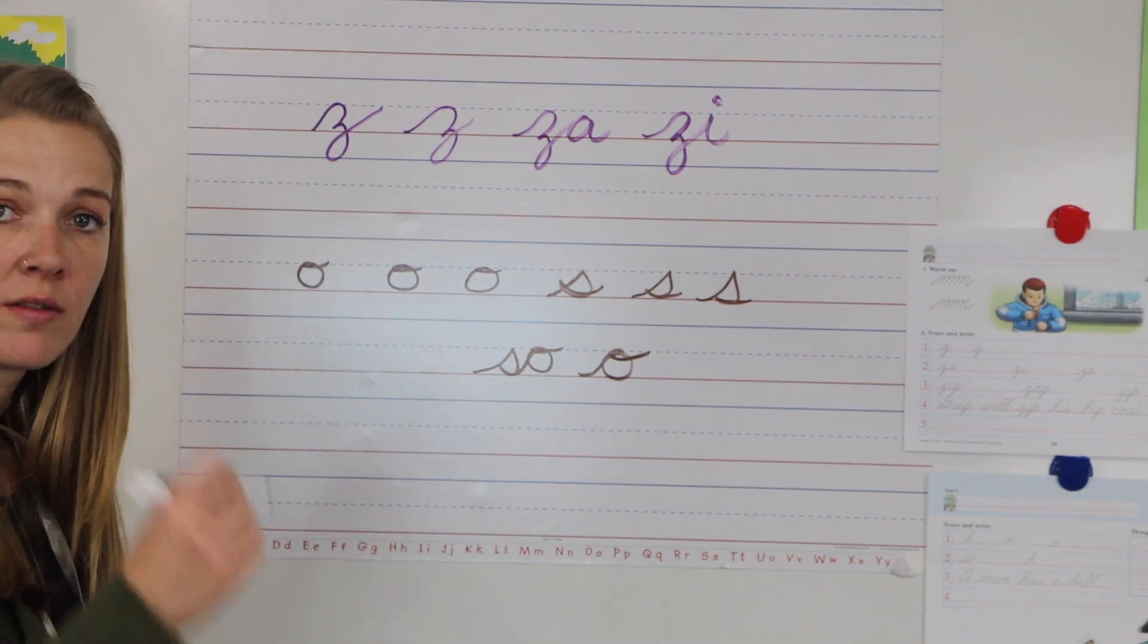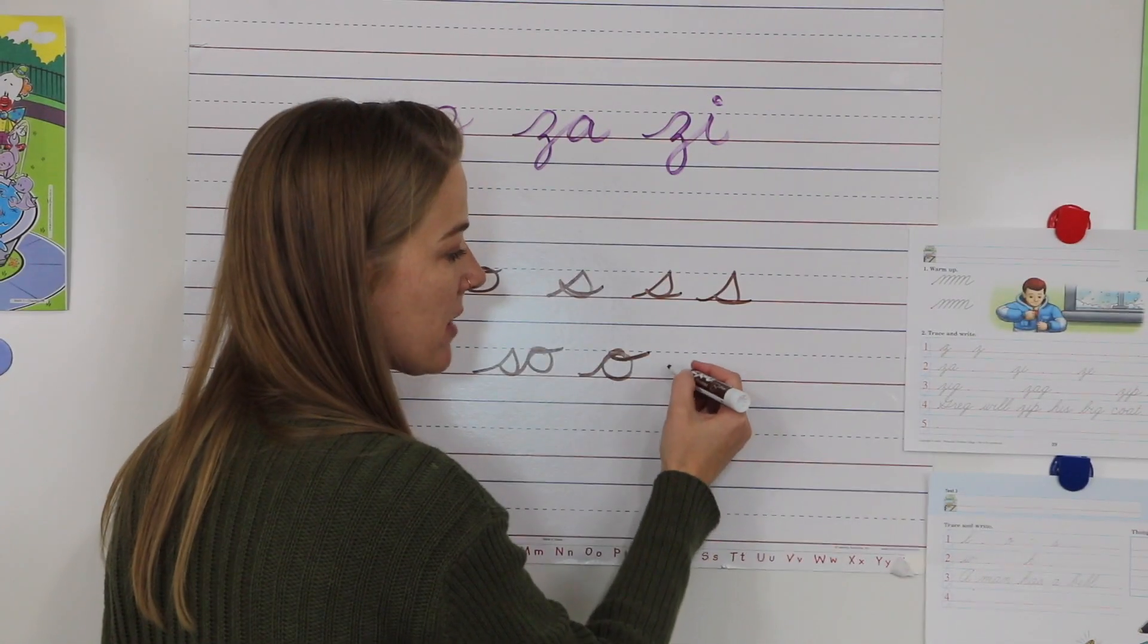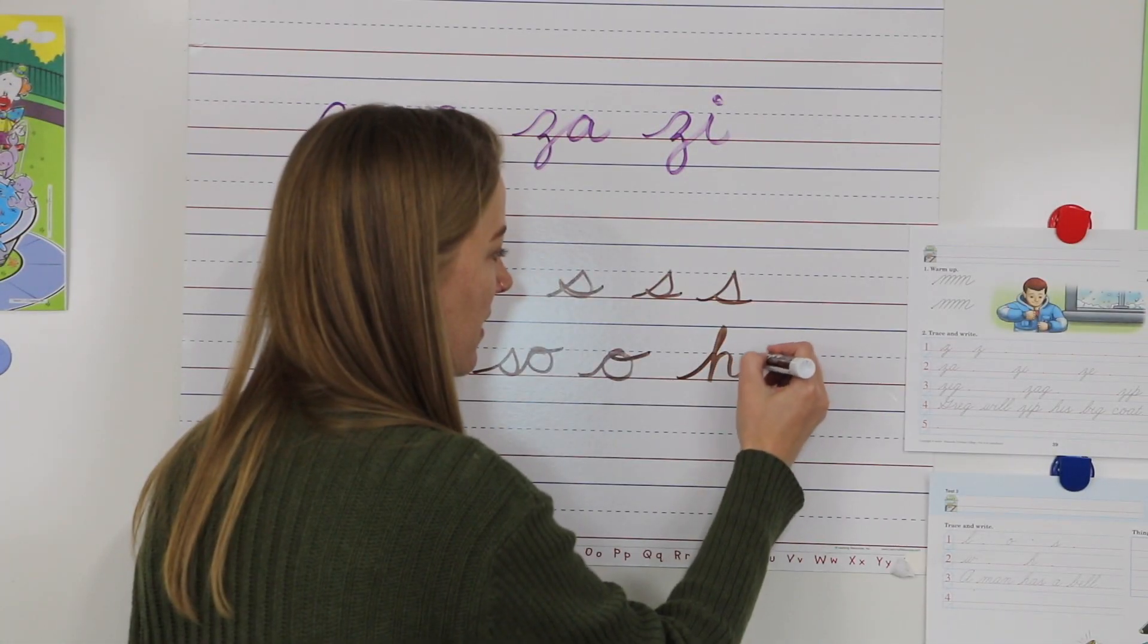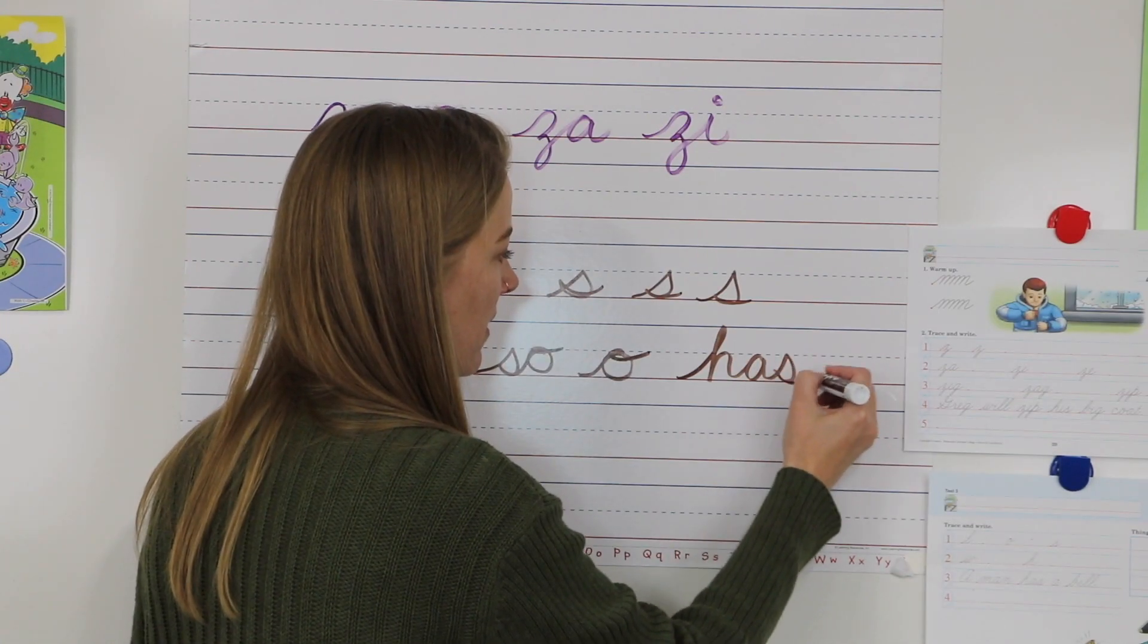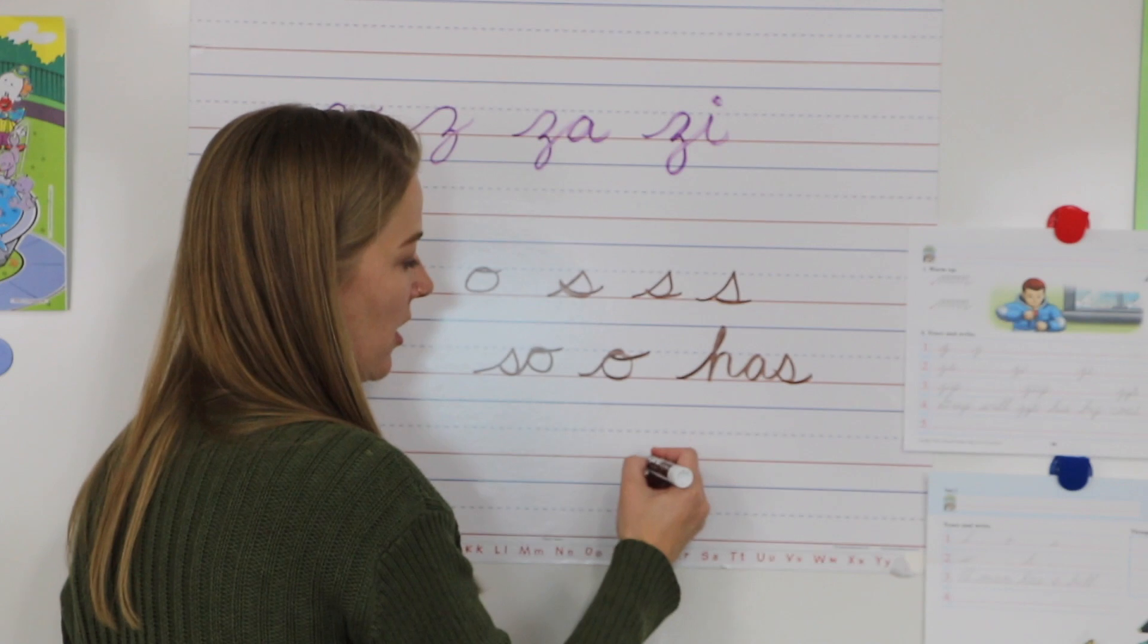Control the small movements, control of your pencil, and the letters need to be in the right spot. So if I was going to do 'has,' okay, notice on my H - you start at the bottom.